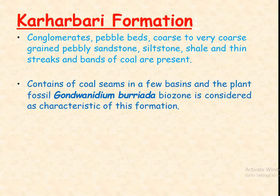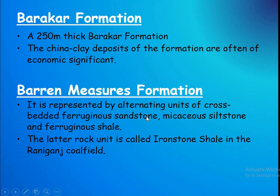Karharbari Formation. This consists of conglomerate pebble beds, coarse to very coarse grained pebble sandstone, seatstone, and thin streaks and bands of coal and jet. It contains coal seams in a few basins, and the plant fossil Gangamopteris buriadica is considered characteristic of this formation.